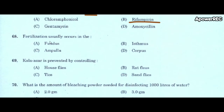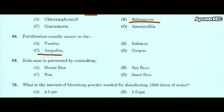Next question: fertilization usually occurs in the A) fundus, B) isthmus, C) ampulla, D) corpus. Correct answer is ampulla. Fertilization usually occurs in the ampulla.